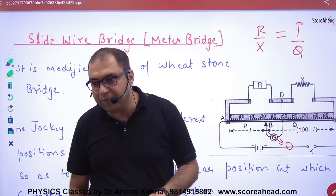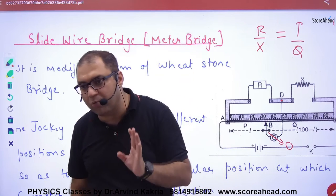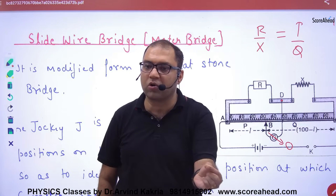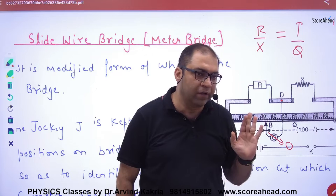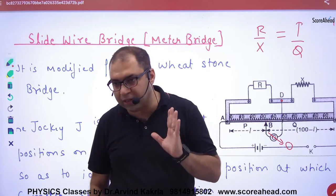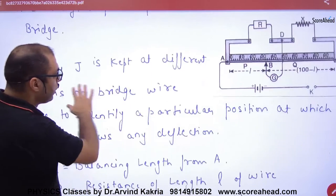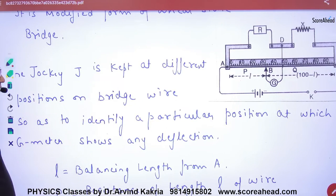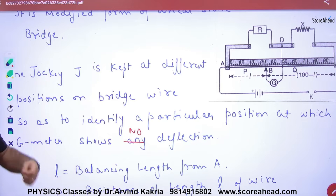In the Wheatstone bridge, changing P, Q, R is very difficult — practically impossible. But in the slide wire bridge, you just move the jockey and P and Q change. You can balance the bridge in one second. So we move the jockey to different positions on the wire until the galvanometer shows no deflection.